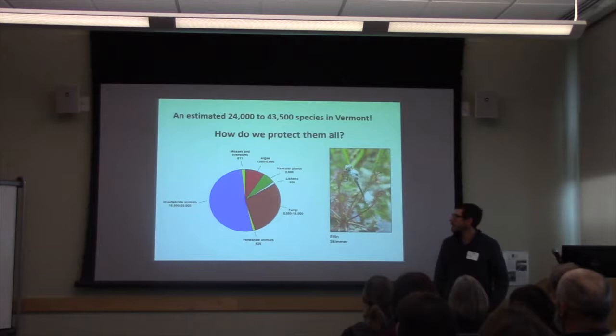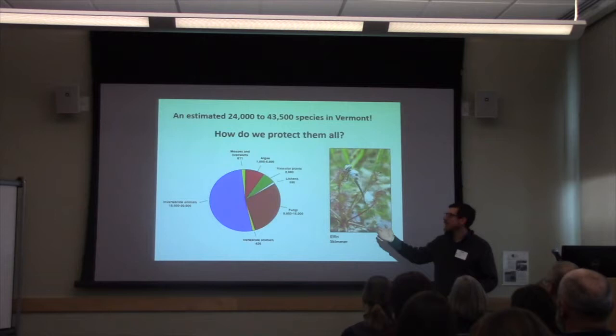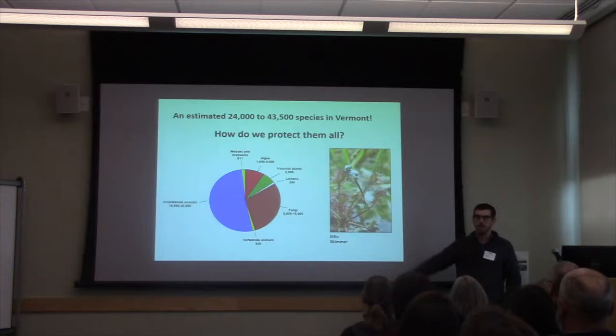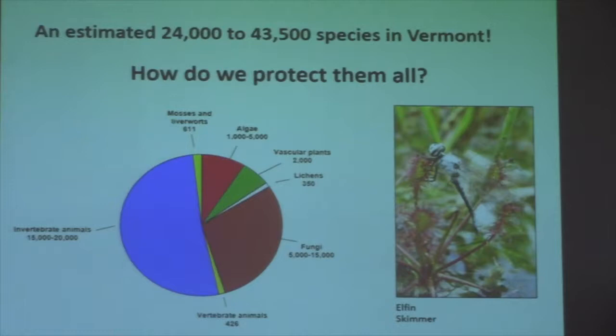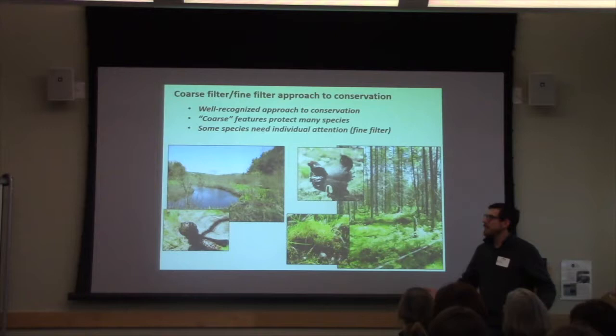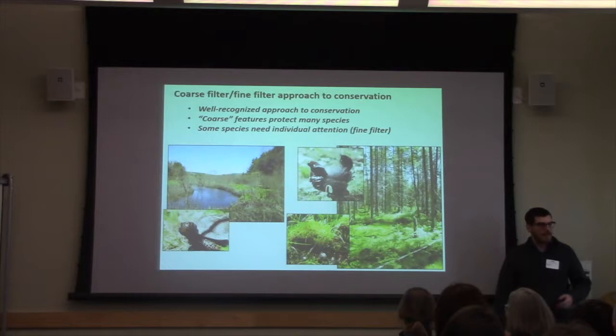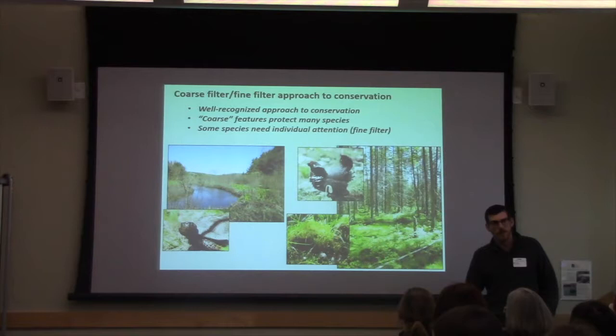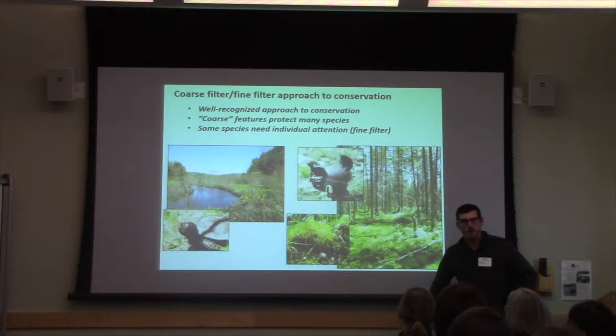How do we protect them all? We know a lot about some species, but not a lot about the vast majority. So we're not going to go through and protect them one by one — we need a different strategy. One strategy to deal with that magnitude of species is to use the coarse filter, fine filter approach to conservation, which has been around for a while and is well recognized in the scientific literature as a practical approach. Instead of going species by species, you find other features on the landscape that, if protected, will bring along many other species.